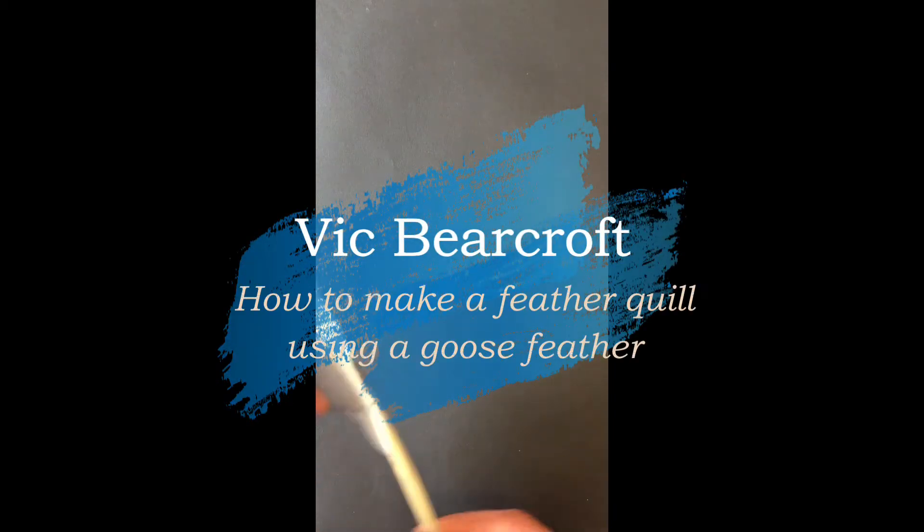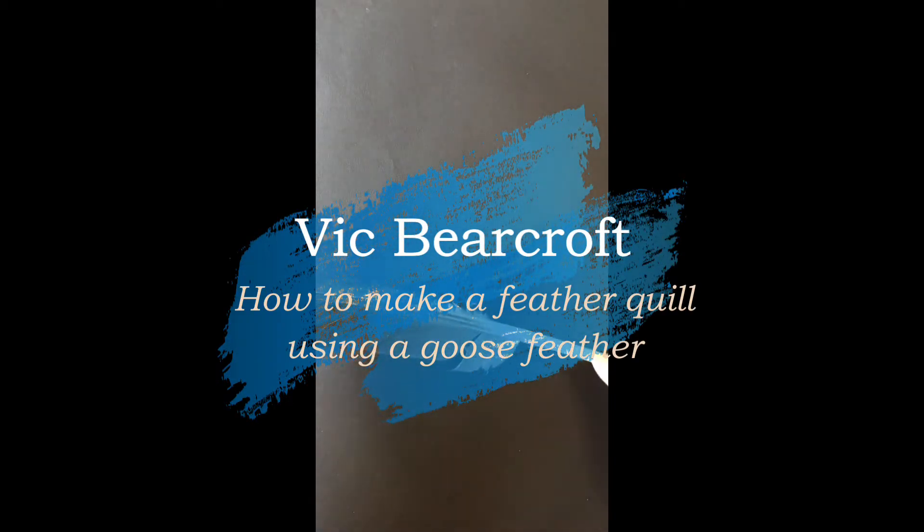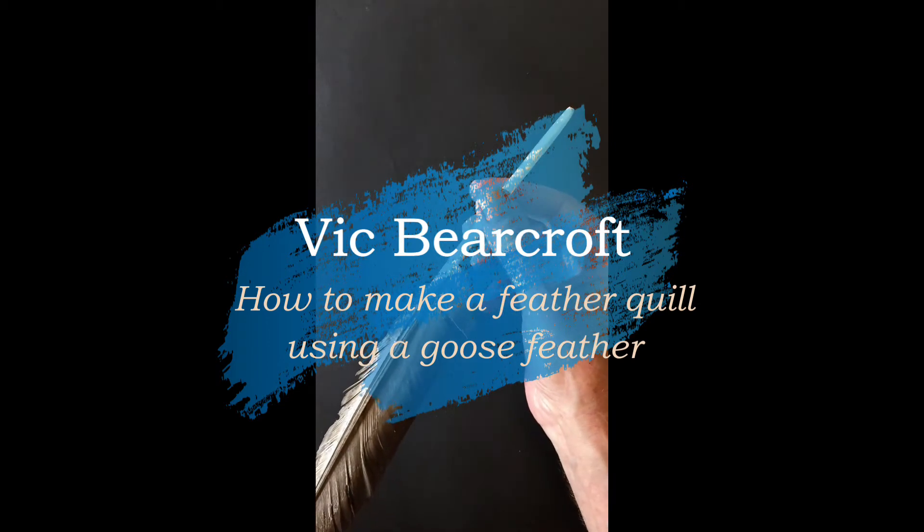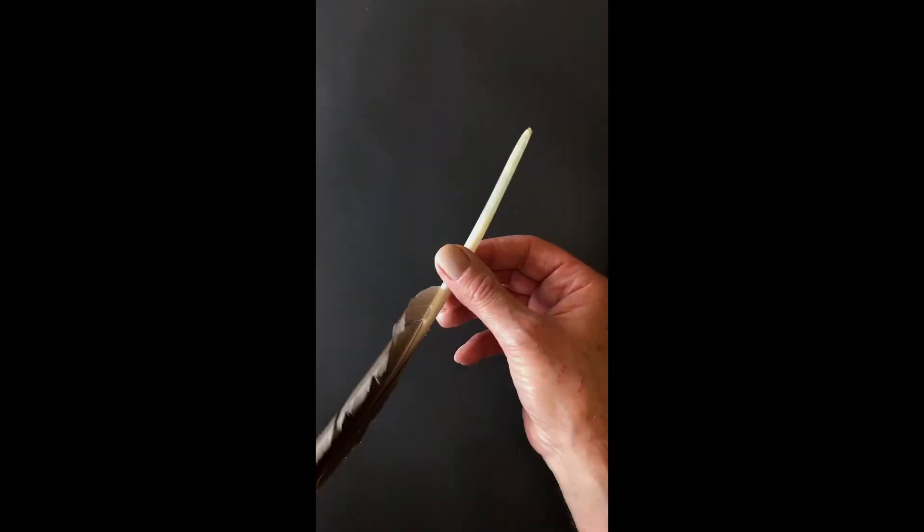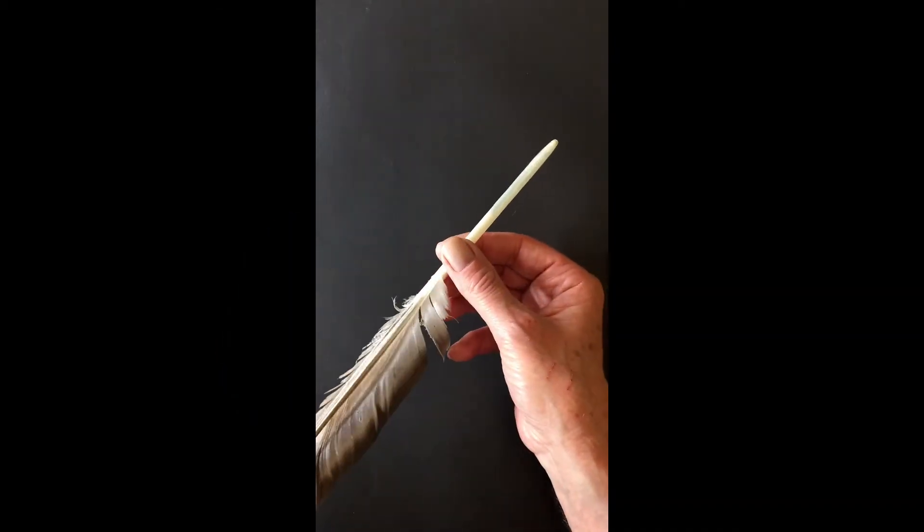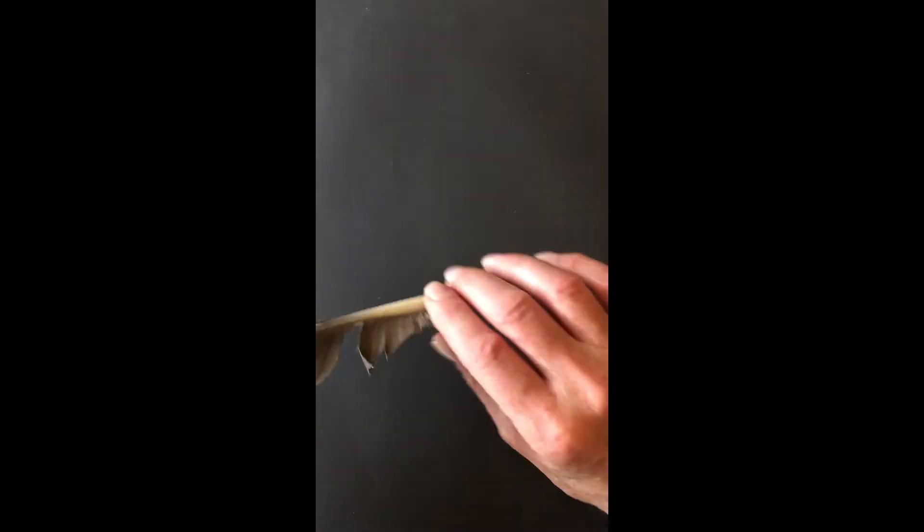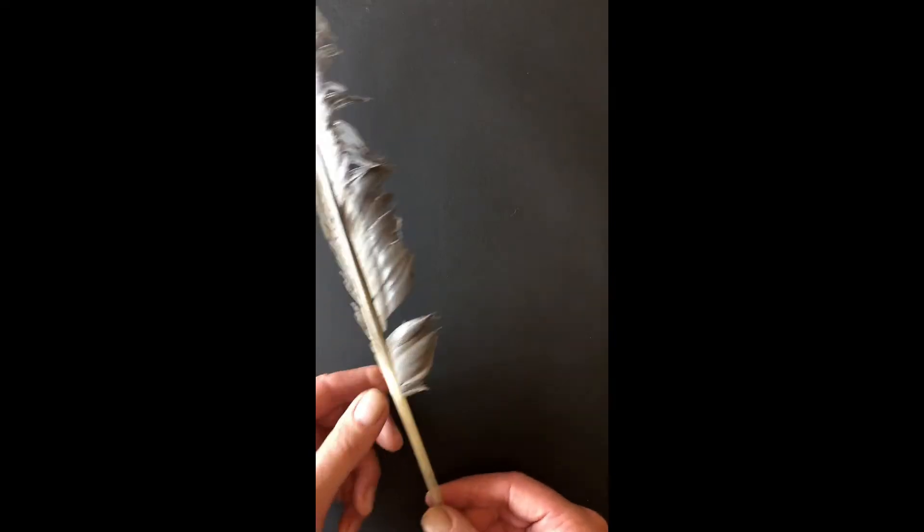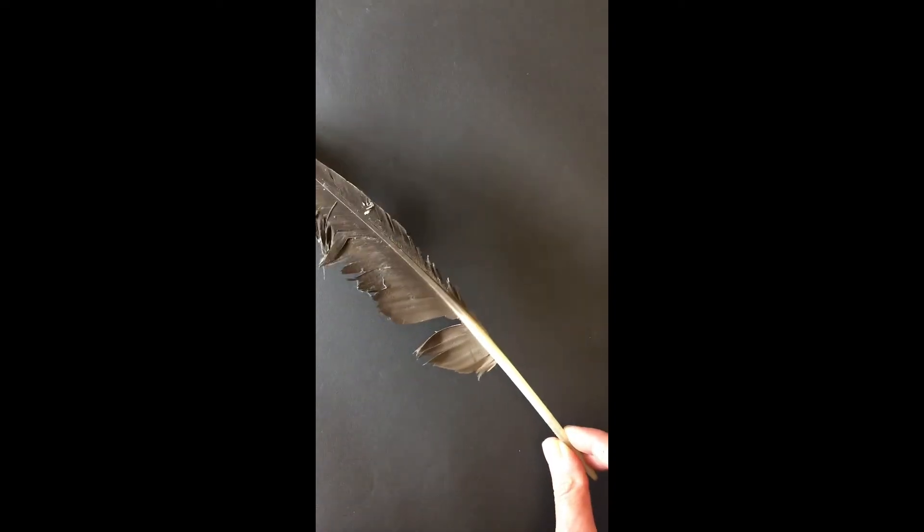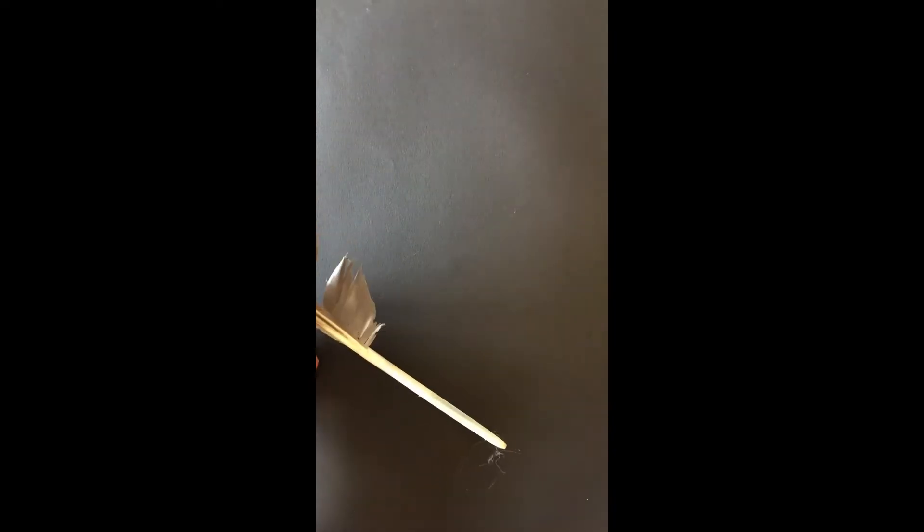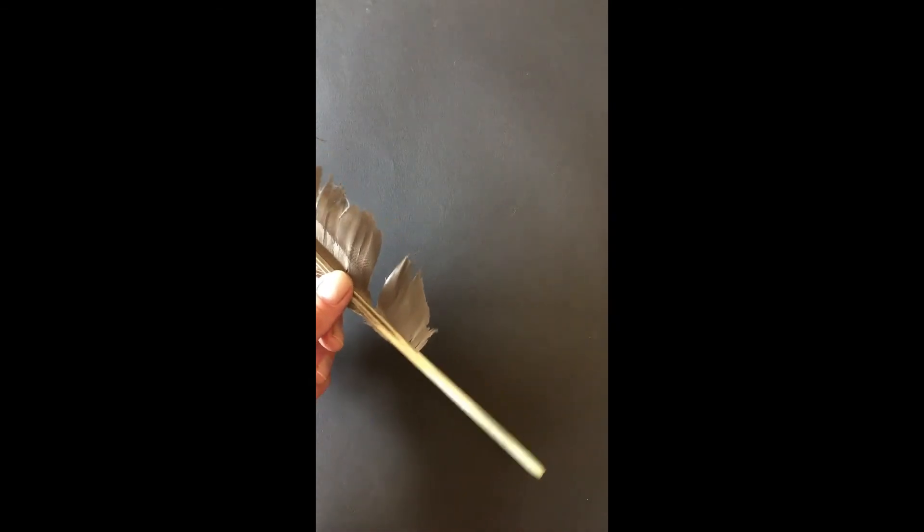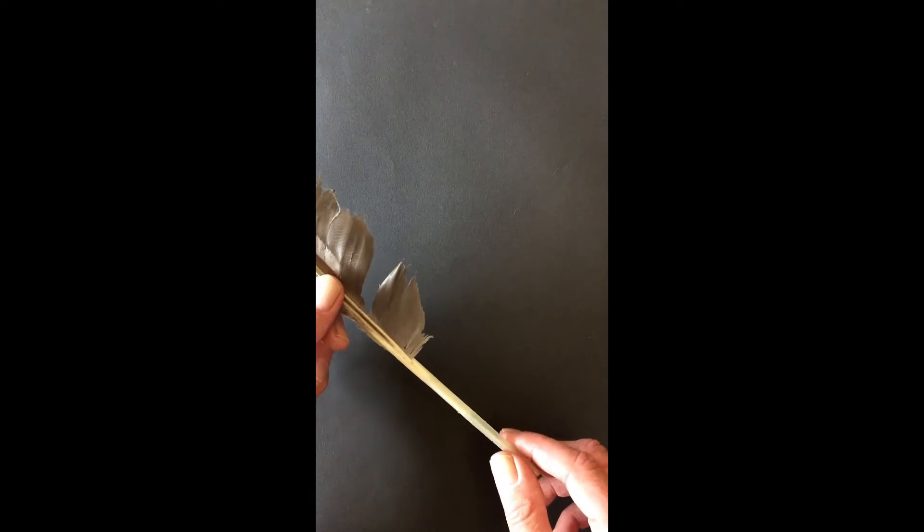To begin with, we're going to make our quill. So what we've got here, there's a lot of these around at the moment, possibly even where you are. This is a Canada goose feather. Certainly just across the road from where we are at the lake, there's a lot of these feathers being shed, so I'll try and collect as many as possible and put them away for various uses, this being one of them.